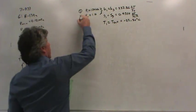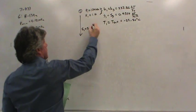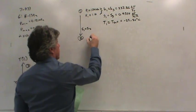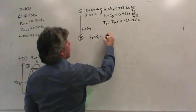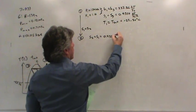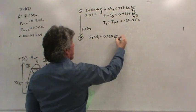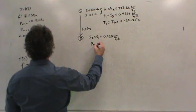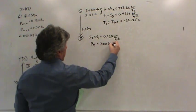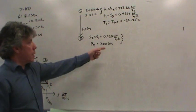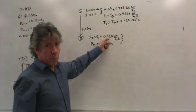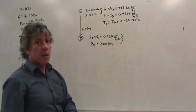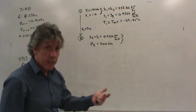To move to state two, the key is that S1 equals S2. State two's entropy equals 0.9354 kilojoules per kilogram per kelvin, and the pressure in state two is 700 kilopascals. If you look up 700 kilopascals in the saturation tables, you'll find this entropy is greater than Sg. That tells you you're in the wrong table. Since the entropy is bigger, you should be in the superheated tables.